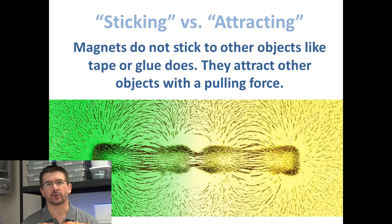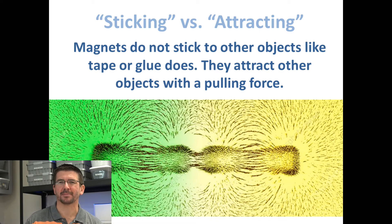Think of a magnet attracting something more like our bodies being attracted to Earth by gravity. We are pulled toward the Earth; we don't stick to the Earth. It's the same way with magnets—magnets don't stick, magnets attract. They have a pulling force that they can exert on other objects, and we'll look at many examples of this over the next few days and weeks.